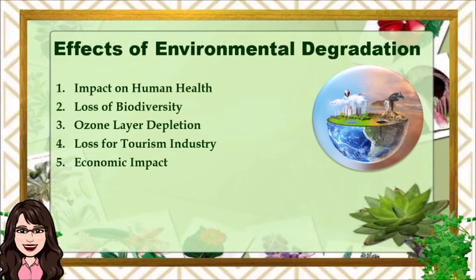Number three, ozone layer depletion. The ozone layer is responsible for protecting Earth from harmful ultraviolet rays. We are experiencing intense heat because the ozone layer is being damaged and depleted. The presence of chlorofluorocarbons and hydrochlorofluorocarbons in the atmosphere is causing the ozone layer to deplete. As it depletes, it will emit harmful radiation back to the Earth.